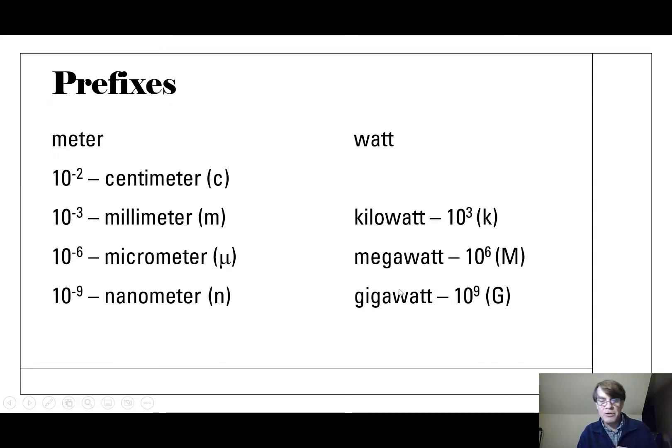A megawatt has six zeros after the 1. A gigawatt, we're getting bigger and bigger. That's a 1 with nine zeros after it. And these symbols here: a small k, big M, big G, these are what you would put like CM for centimeter, or MM for millimeter, or mu M for micrometer, or NM for nanometer.